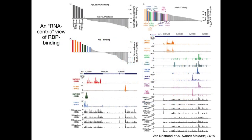We can also look at this from an RNA-centric point of view, taking an RNA of interest and examining which proteins bind to it and where within that RNA they bind. On the bottom left is data for the XIST RNA, a non-coding RNA involved in dosage compensation, showing four proteins that bind to it — HNRNPK, PTBP1, HNRNPM, and SRSF1 — each binding to different regions. We can use this to build up what RNP particles might look like within cells. The same type of data is shown on the right for the MALT1 non-coding RNA, where about five or six proteins bind in different regions.